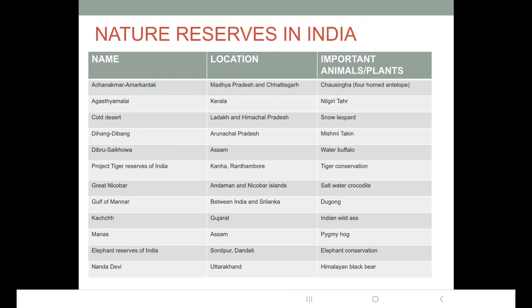In the southern part there is Agasta Malai nature reserve, located in Kerala. The important animal here is the Nilgiri Tahr, found in the Shola grasslands of the Nilgiri, which is its ideal habitat. Then the Cold Desert nature reserve spans across two states: Ladakh and Himachal Pradesh. The important animal in this nature reserve is the snow leopard.